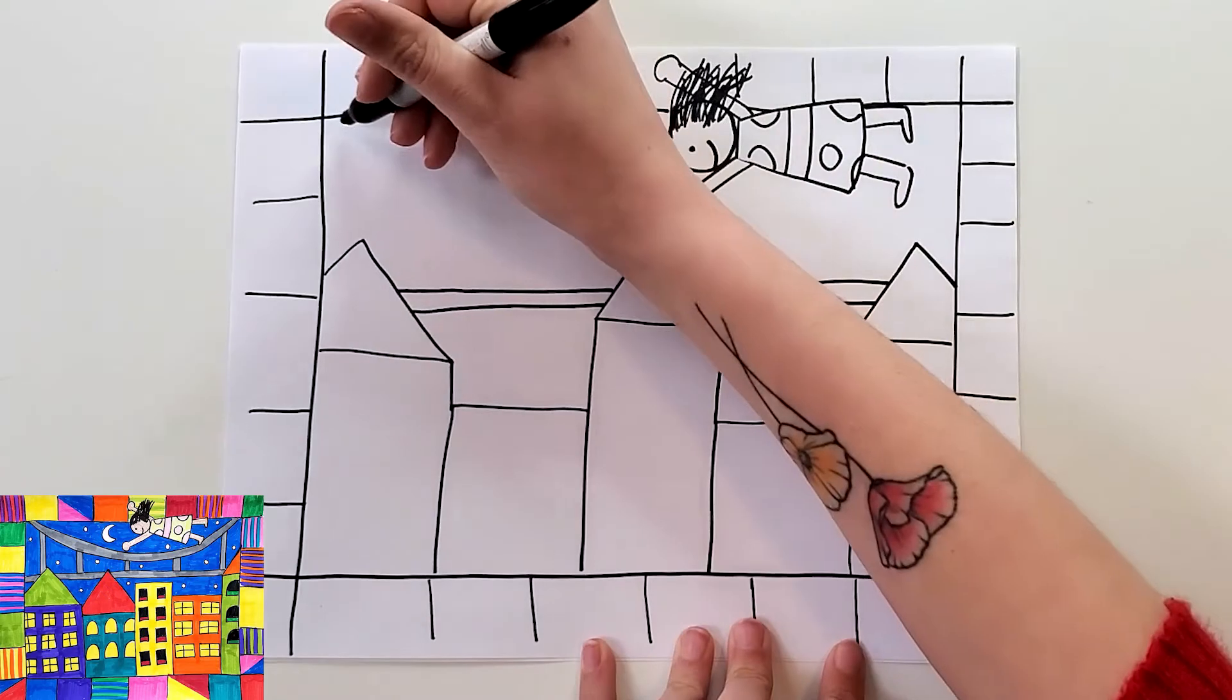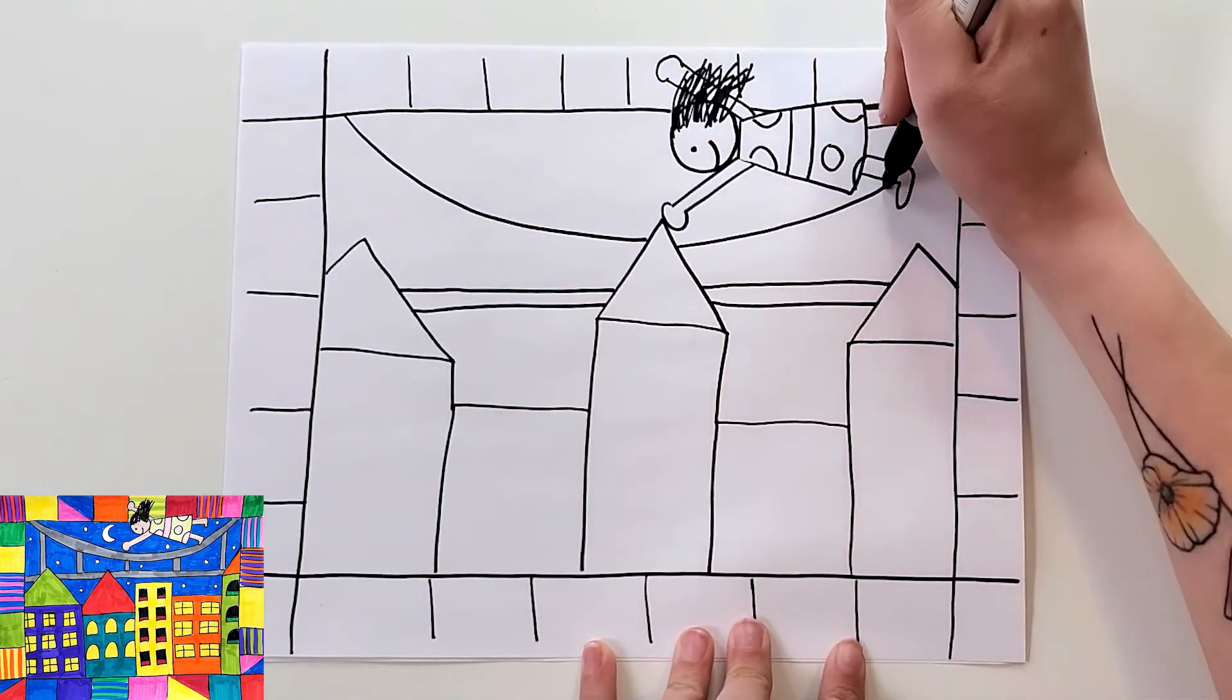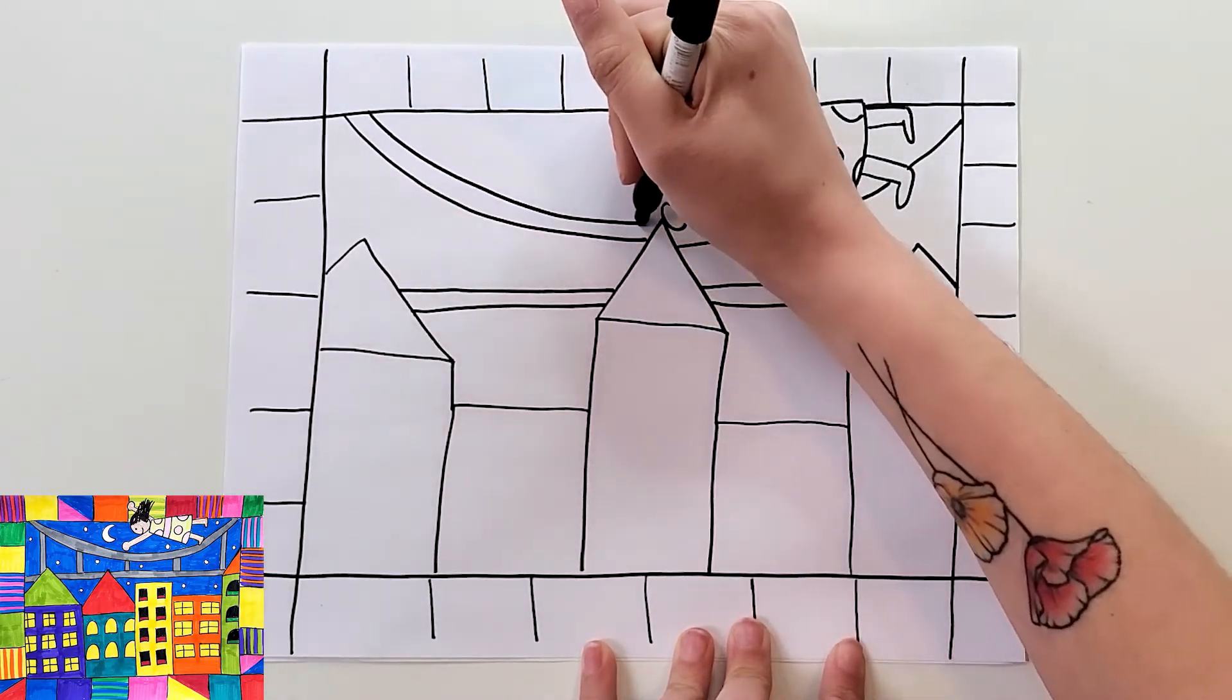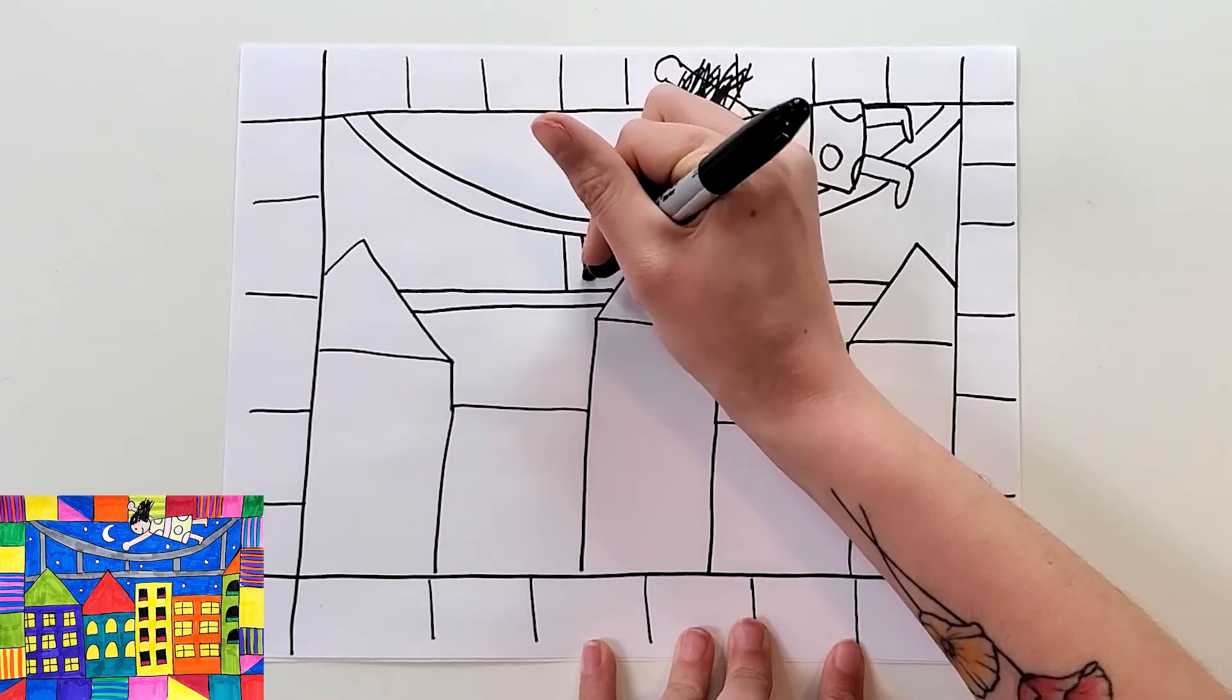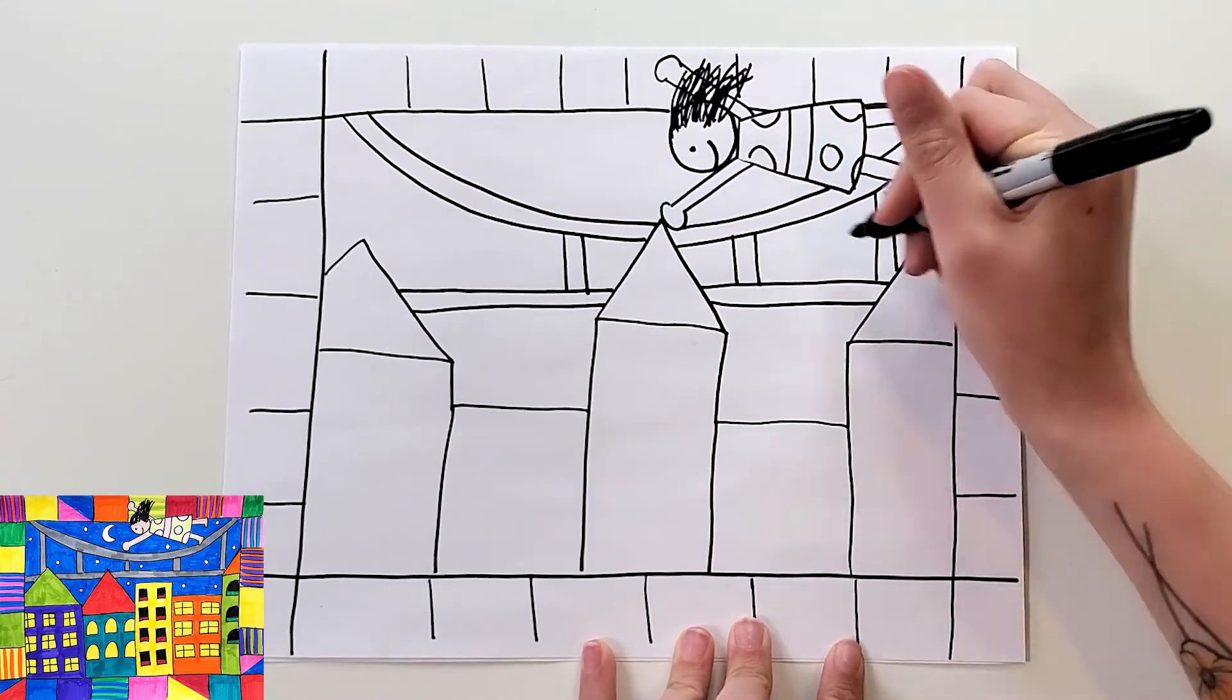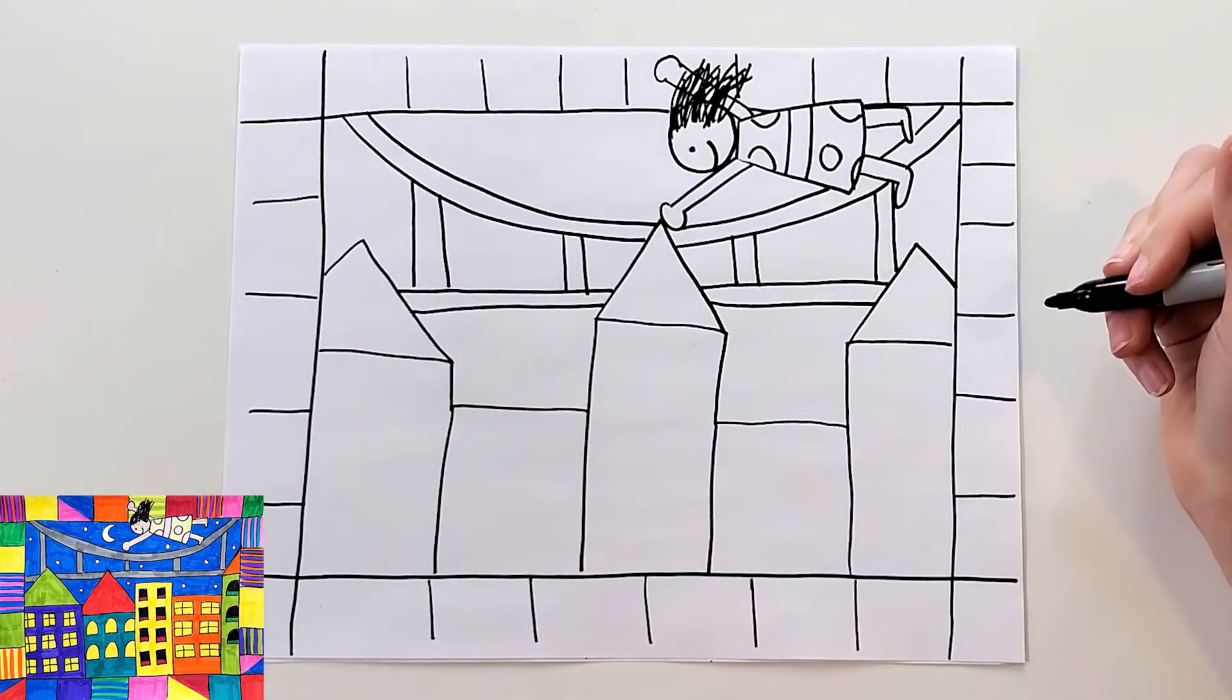Then above it, I'm going to do a line that kind of curves down and when it gets towards the middle, have it curve back up. Then another one just above it. And then some vertical lines. Now I'm done with my bridge.